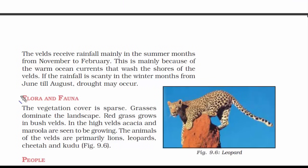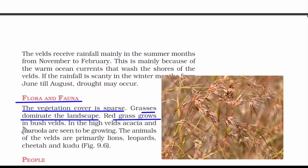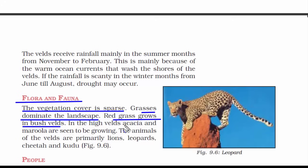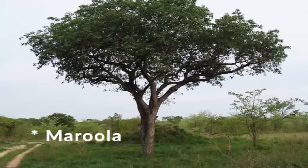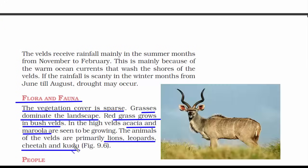Now let's read about the flora and fauna of this place. The vegetation cover is sparse — meaning thin and scattered. Since it's a grassland, grasses dominate the landscape. Red grass grows in these velds, and in the region of the high velds in the northeastern side, you have acacia and marula. The animals found in this place include lion, leopards, cheetah, and kudu.